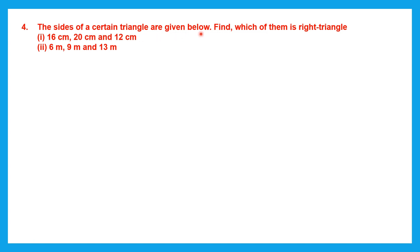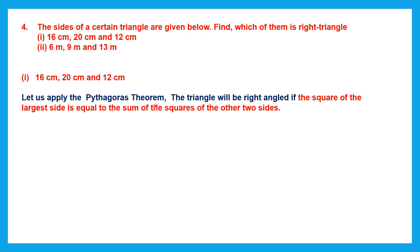Question 4: The sides of a certain triangle are given. Find which of them is a right triangle. The first triangle has sides 16 cm, 20 cm, and 12 cm. Let us apply the Pythagoras Theorem. The triangle will be right angled if the square of the largest side equals the sum of the squares of the other two sides. The largest side — 20 cm — is taken as the hypotenuse. So 20² should equal 16² + 12².